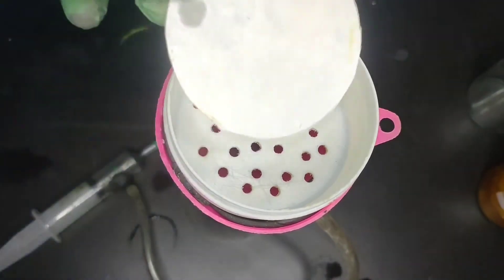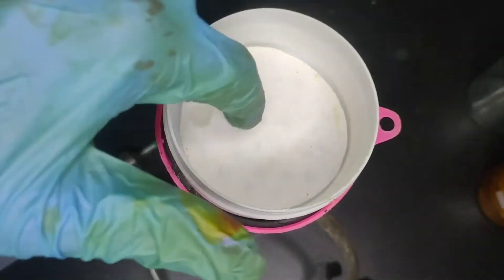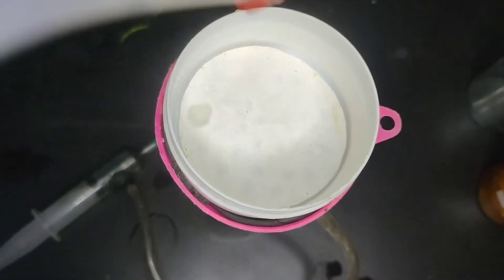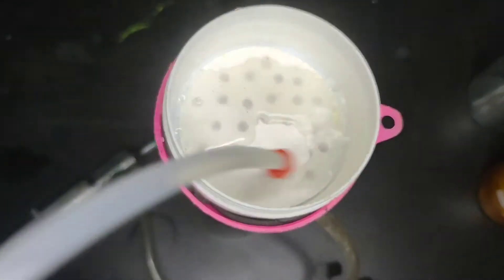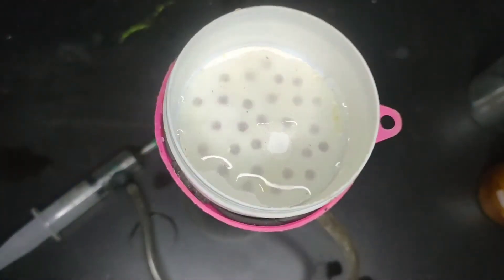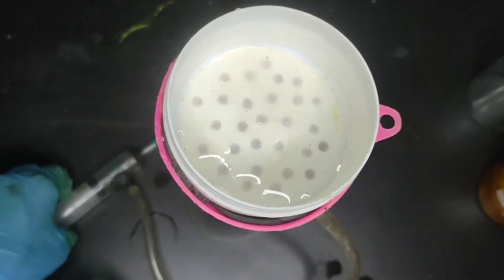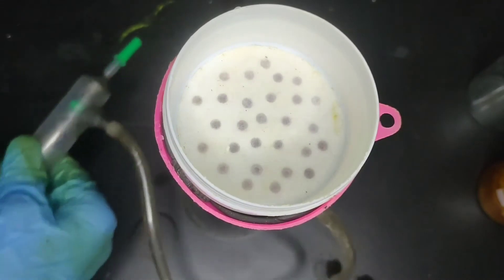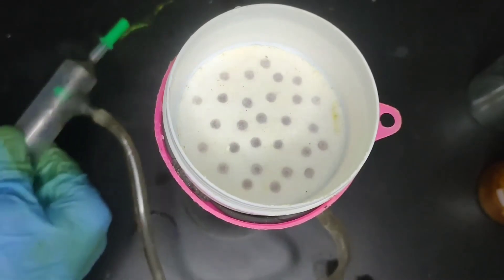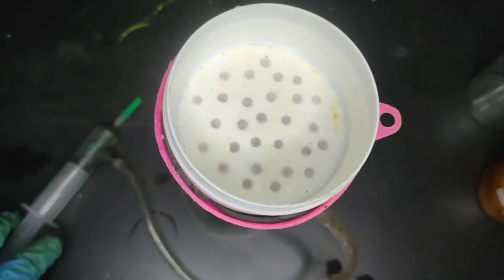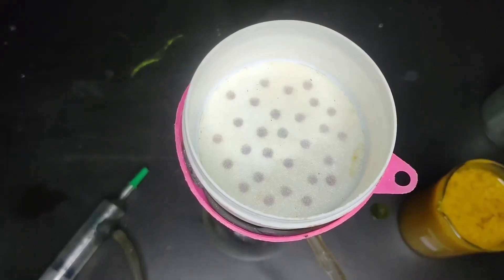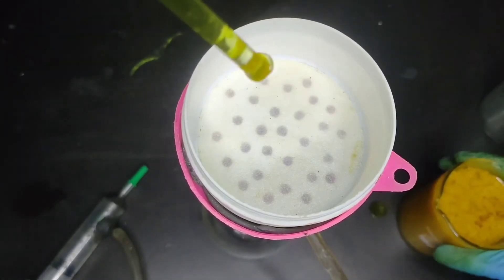So first we place a filter paper which is cut in the size of the Buchner funnel. Then the filter paper is wetted by water and vacuum is applied to form a seal between the filter paper and the funnel. Now it is ready to vacuum filter. So I am filtering this precipitate using vacuum filtration.